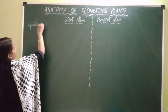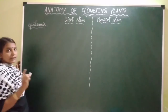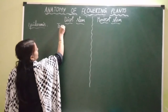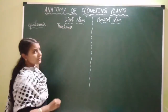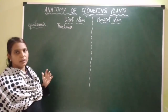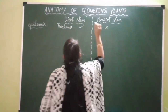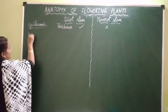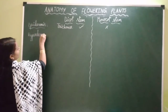In dicot stem and monocot stem, epidermis is similar, but in the epidermis of dicot stem, trichomes are formed. Trichomes, or stem hairs, are present. The function of trichomes is reducing the rate of transpiration, and they may be secretory also. These trichomes are present in dicot stem but absent in monocot stem.